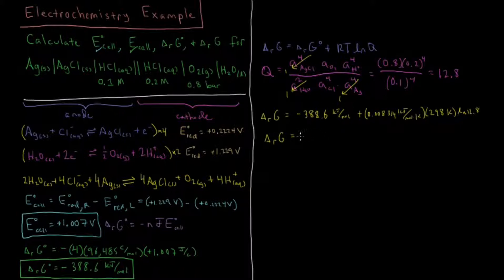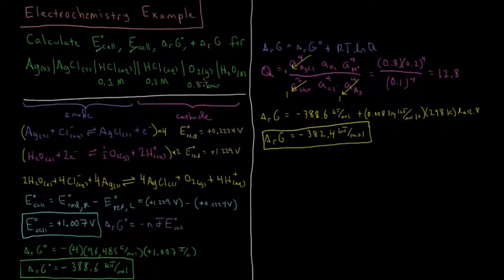So our ΔrG of reaction is −388.6 kJ/mol. That is value three of four that we're checking off.